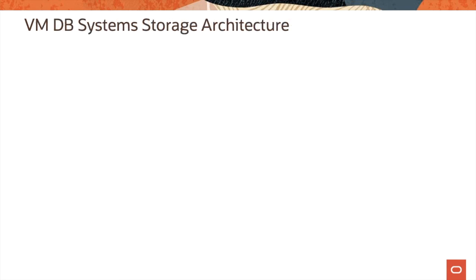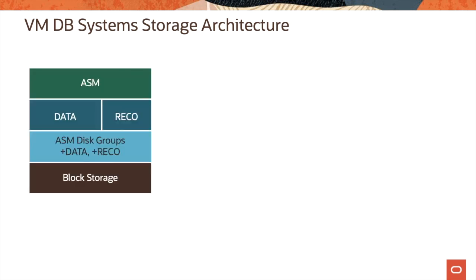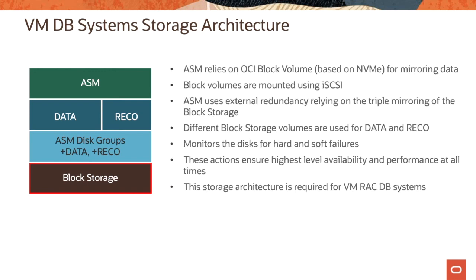Let's now look at the VMDB systems storage architecture. VMDB systems use the block storage service for database storage. It uses ASM on top of OCI block volumes for mirroring data. Block volumes are mounted to the VMs using iSCSI, and ASM uses external redundancy relying on the triple mirroring of block storage. When ASM disk groups are carved out, different block storage volumes are used for the data and REDO disk groups.